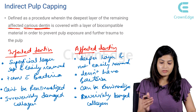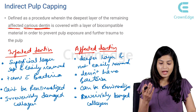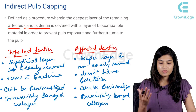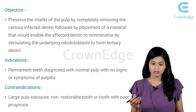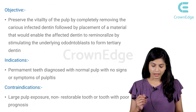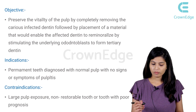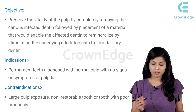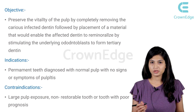In indirect pulp capping, we are trying to preserve the affected dentin, and later on this dentin is going to be remineralized — that's how we preserve the vitality of the pulp tissue. The basic objective of indirect pulp capping is to preserve the vitality of the pulp by completely removing the caries-infected dentin, followed by placement of a material that enables the affected dentin to remineralize by stimulating the underlying odontoblasts to form tertiary dentin.